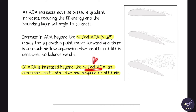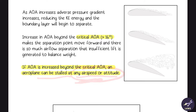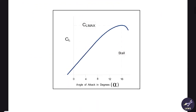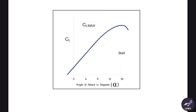An aeroplane can be stalled at any airspeed or attitude — this is important. If you cross the critical angle of attack of 16 degrees, the aircraft will stall regardless. This is shown in the CL vs angle of attack graph: as angle of attack increases, CL keeps increasing till about 16 degrees.